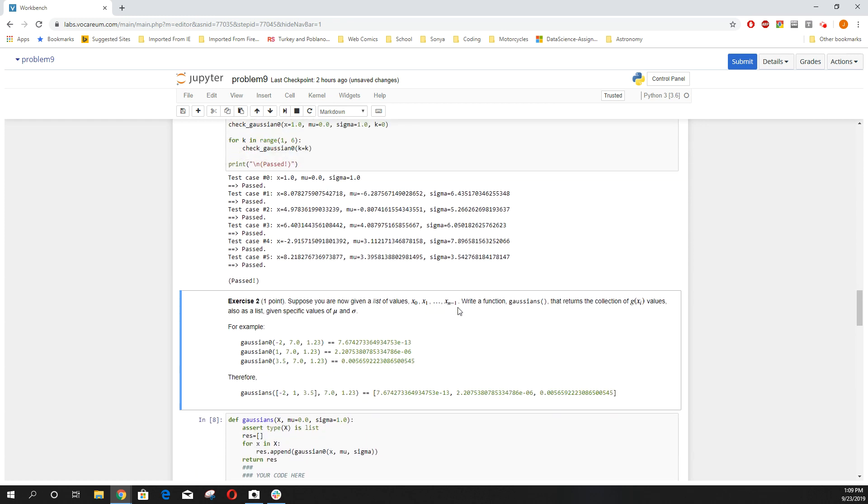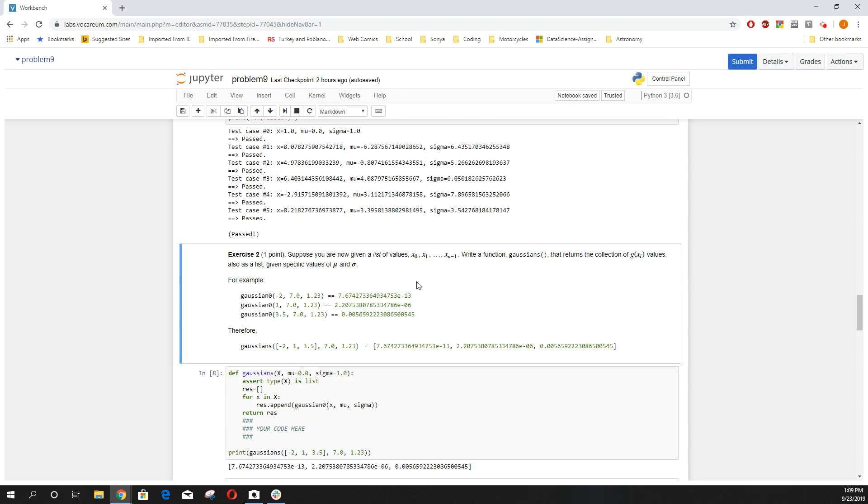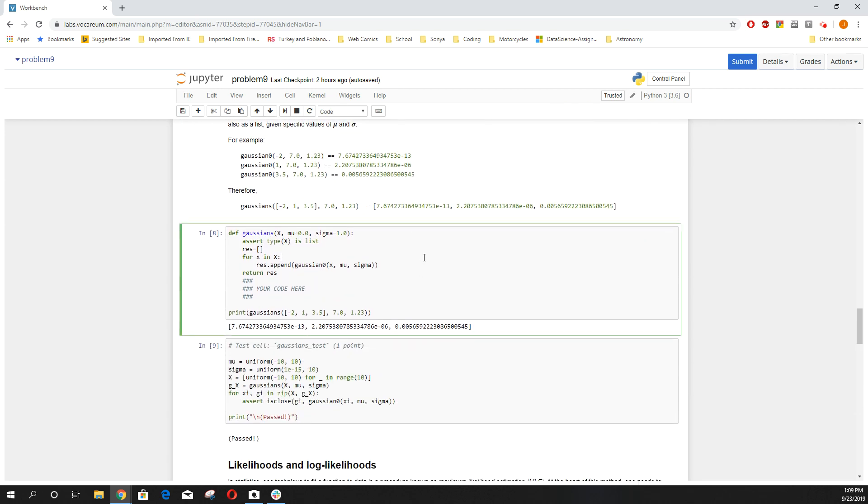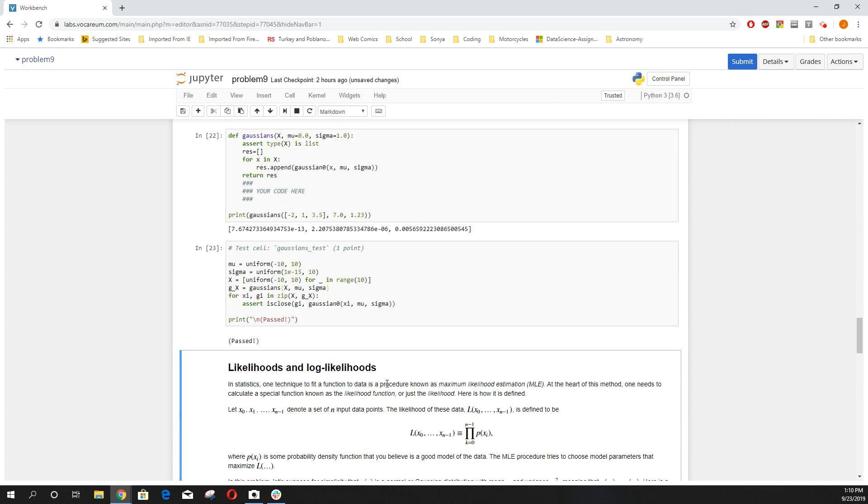And then we get our next one, which is simply, if I give you a list of values, I want you to give me back a list of the different Gaussians. So I wrote it. I said make a list. Now for every element in the list that they gave us, go ahead and append on the Gaussian of that particular value. And then return the result. I run it and you see these values can be pretty small decimals. Passes.